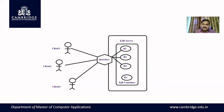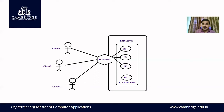In the EJB container, a number of bean instances are created. The bean will be served on a particular client request, and when the response is sent back, the bean will be destroyed. If the same client requests the bean again, the same instance will not be allocated — a different instance may be allocated.